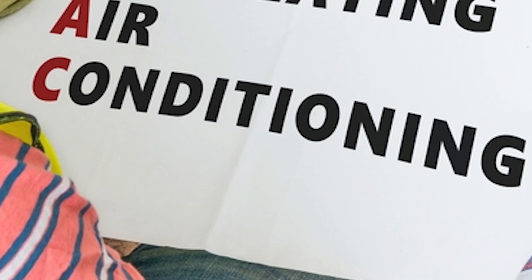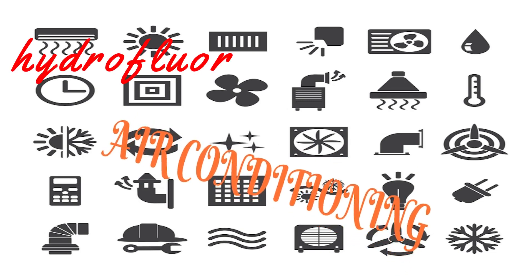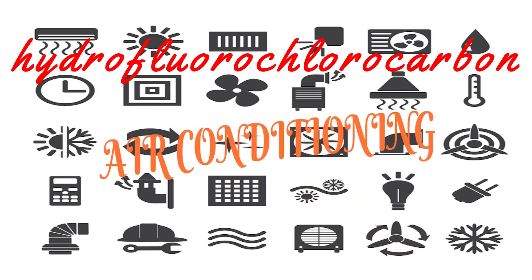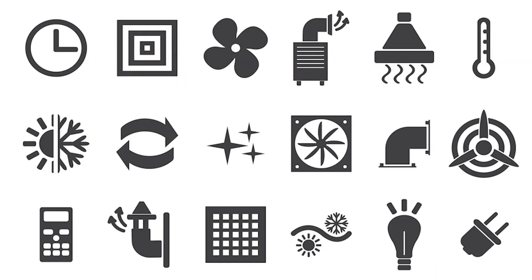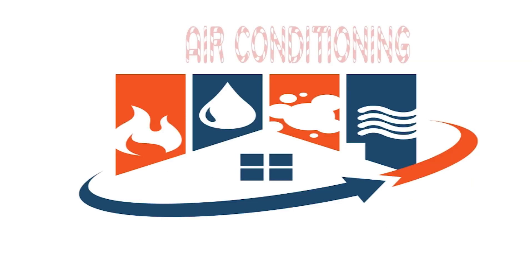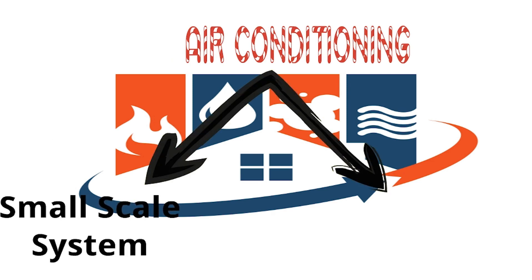The last part of the acronym is AC — air conditioning. Air conditioning systems provide cooling for a building using hydrochlorofluorocarbons. Cooling capacity is expressed in tons, which is equivalent to 3.5 kilowatts or 12,000 British Thermal Units per hour. AC can be categorized into two types: the small-scale system and the distributed system.